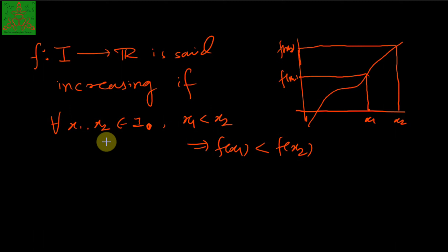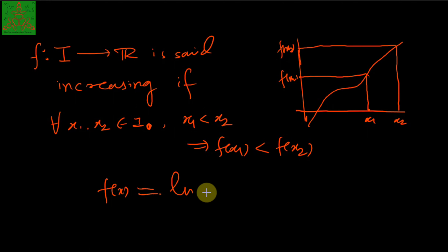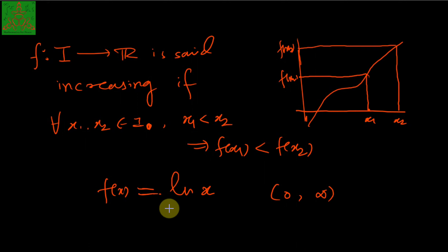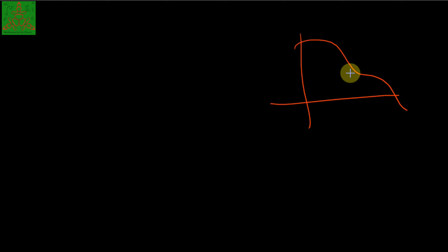An example of an increasing function is f(x) = ln(x) in the domain (0, infinity). The next definition is the decreasing function. A decreasing function is one whose graph decreases — that is, the function value decreases with an increment in the value of x.